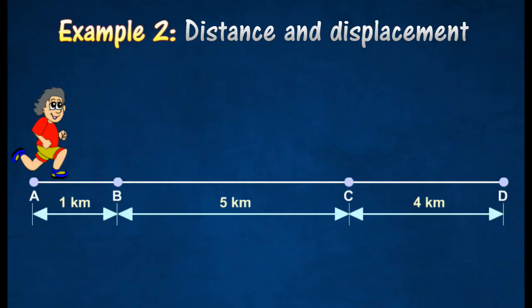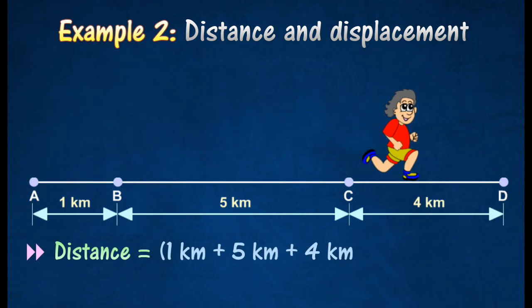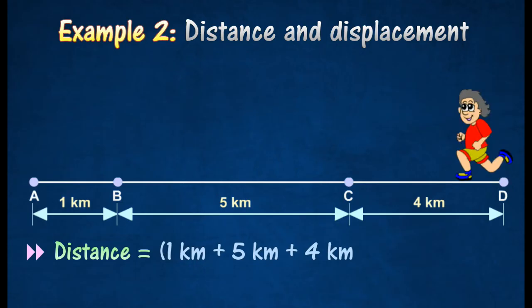The following shows the position of a runner at various times. The runner runs from A to D, then he reversed the direction of travel and moves towards C.